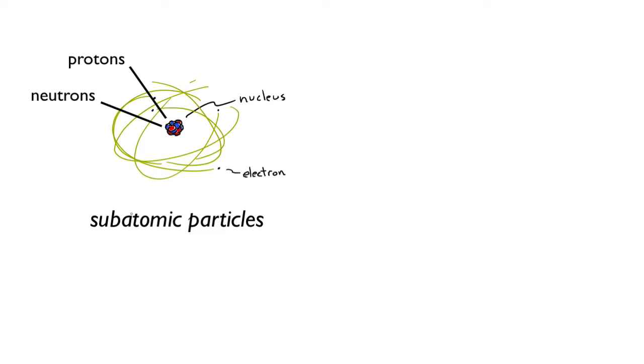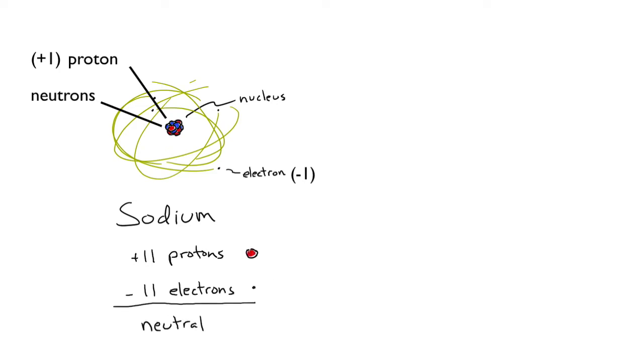Each proton carries a charge of plus one, while each electron carries a charge of minus one. For a neutral atom, the number of protons equals the number of electrons.